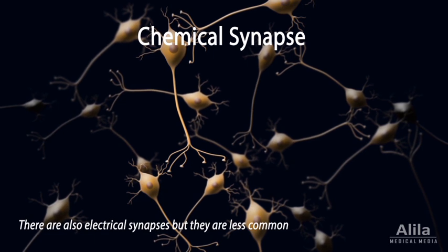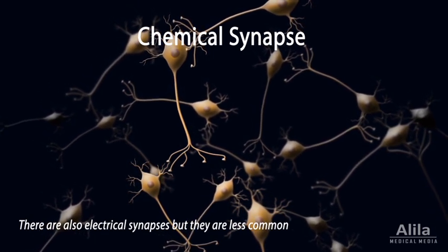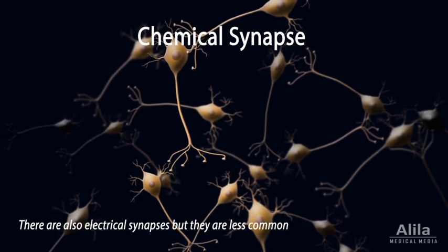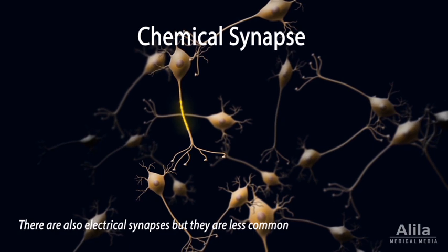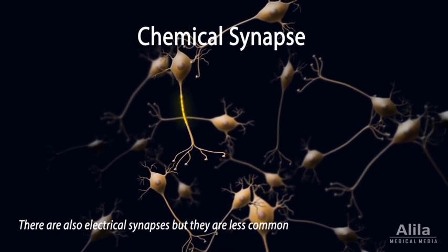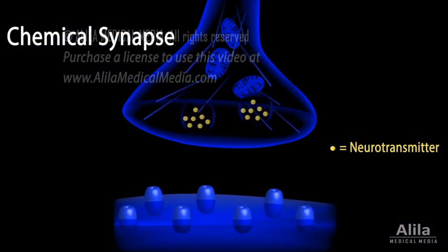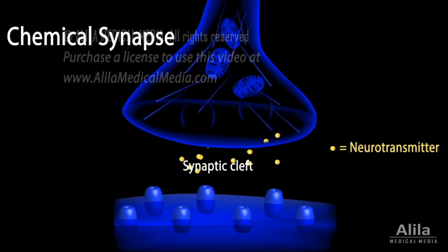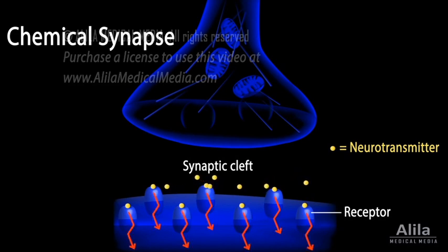Neurons communicate with each other mainly via chemical messages or neurotransmitters. When a neuron is sufficiently stimulated, an electrical impulse called an action potential is generated and travels down the axon to the nerve terminal. Here, it triggers the release of a neurotransmitter into the synaptic cleft, a space between neurons. The neurotransmitter then binds to a receptor on a neighboring neuron, generating a signal in it, thereby transmitting the information to that neuron.